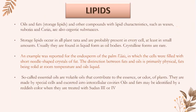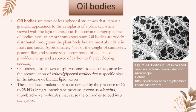Lipids — oils, fats, and other compounds with lipid characteristics such as waxes, suberin, and cutin — are also ergastic substances. Usually they are found in liquid form as oil bodies; crystalline forms are rare. Oil bodies are more or less spherical structures that impart a granular appearance to the cytoplasm of a plant cell. They are also known as spherosomes or oleosomes, and arise by the accumulation of triacylglycerol molecules at specific sites in the interior of the lipid bilayer.